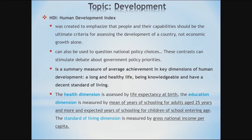What else about HDI? When we talk about the key dimensions of human development, we are talking about three dimensions: the health dimension, education dimension, and standard of living dimension. The health dimension is assessed by life expectancy. The education dimension is measured by mean years of schooling for adults aged 25 and more, and expected years of schooling for children of school-entering age. The standard of living dimension, when talking about the Human Development Index, is measured by the gross national income, or GNI per capita.